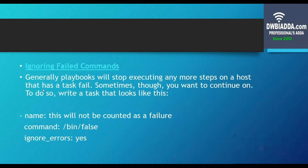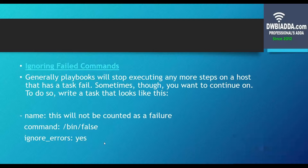Generally, playbooks will stop executing any more steps on a host if a task fails. If you want to continue from that phase, we can write a task which looks like this. Here we are defining a name and it will not be counted as a failure. We define the command, and set ignore_errors to yes. So basically, the name of the task which we don't want to be counted as failure, the command acting on the task, and the parameter ignore_errors set to yes — it will simply ignore the failed command under this task.